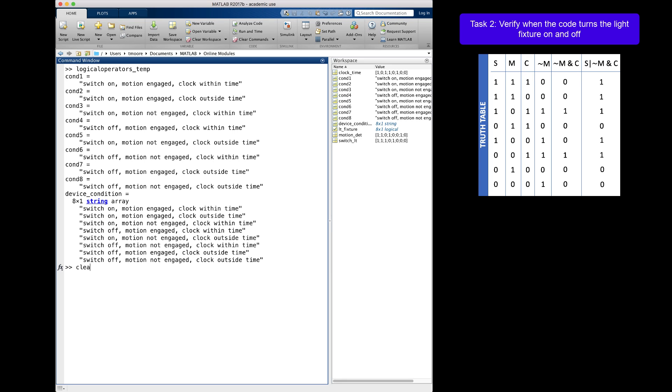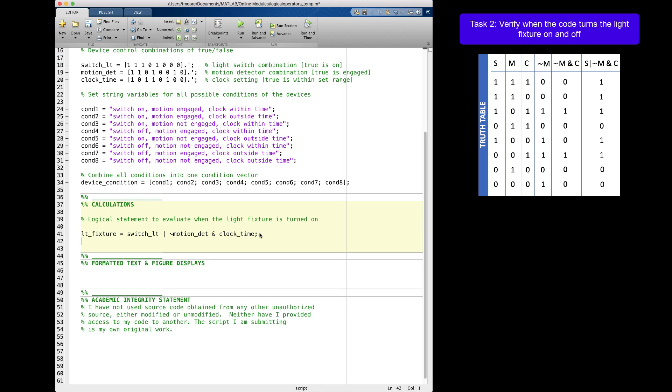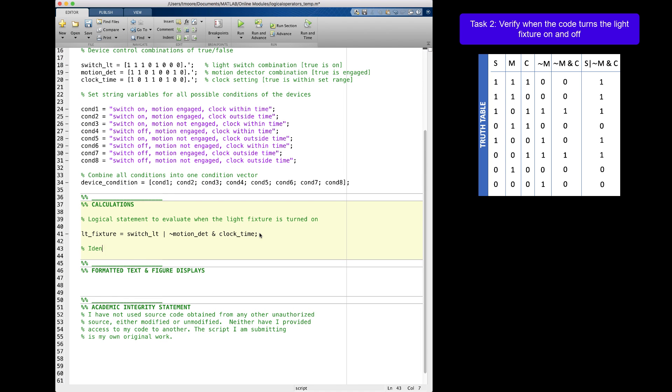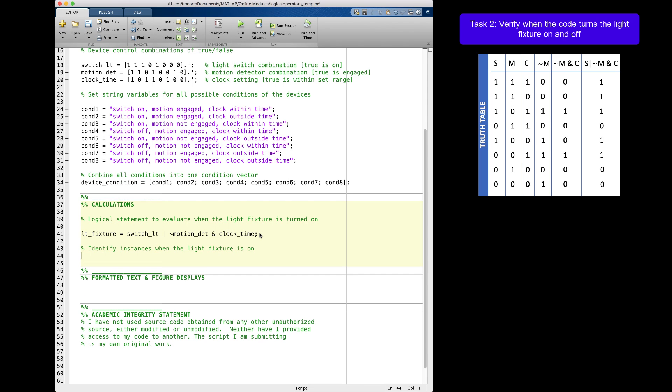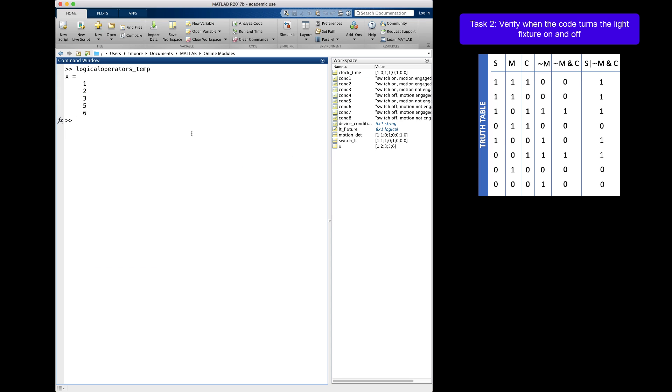I now need to code the script to find the instances when the light is turned on, which is when the variable LT underscore fixture is true. Remember that find determines the linear index location of all non-zero elements in an array. So I will make a dummy variable, which I will call X, and use the find command to determine the linear indices where my LT underscore fixture is non-zero. This corresponds to all of the conditions for which the light fixture is on. Let's run this to verify that it gives me the output I expect. I can see the indices stored in X are 1, 2, 3, 5, and 6, and these correspond to the true values in LT underscore fixture.